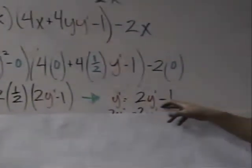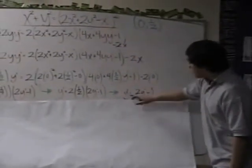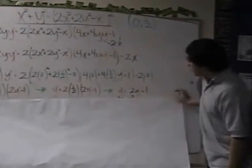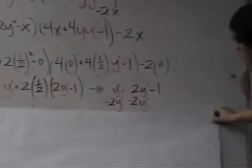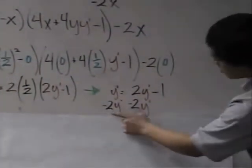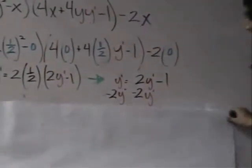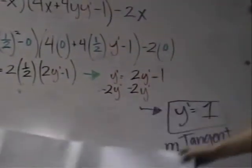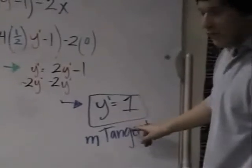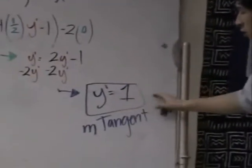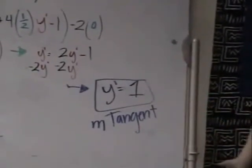Now you want y prime to be on one side of the equation. So what we're going to do is subtract 2y prime from both sides, and your final equation will be y prime equals 1. And y prime equals 1 is the slope of the tangent line.